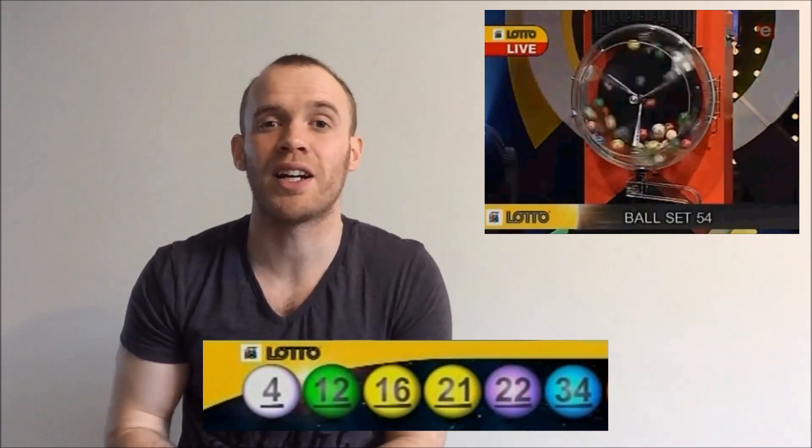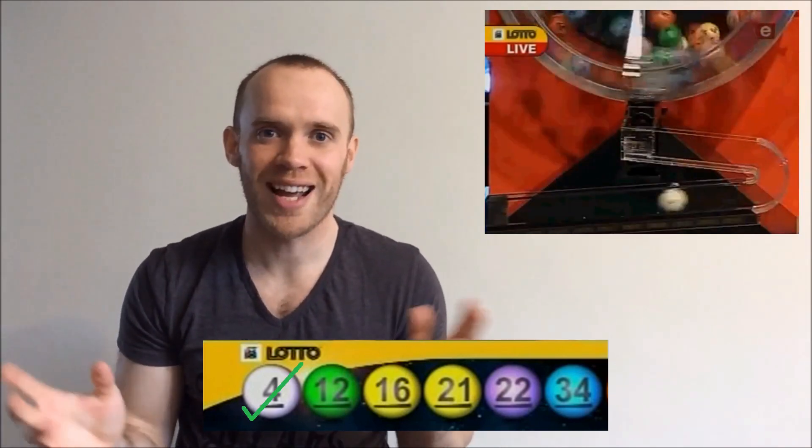So the draw is underway and you're waiting for that first number. Since the order the numbers come out don't matter, any of the six numbers you've got could come out first and you'd be happy. There are 59 balls in there, so you've got a 6 in 59 chance of matching the first ball. The ball is drawn, and it's one of your numbers. Hooray!